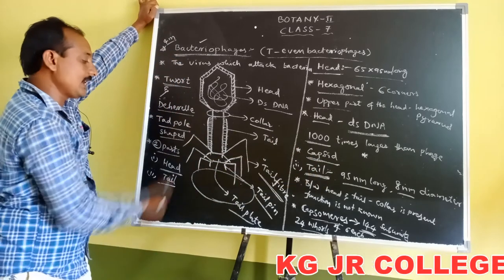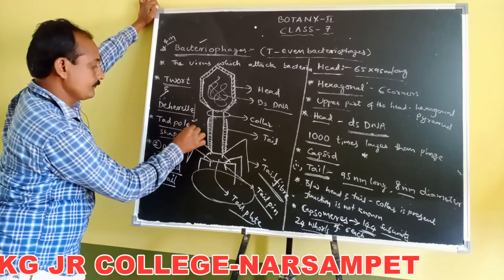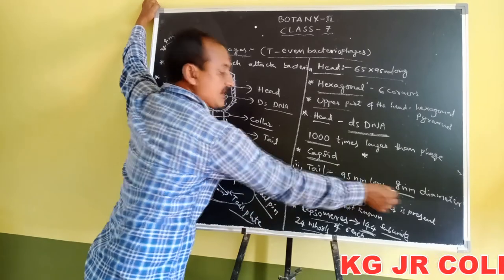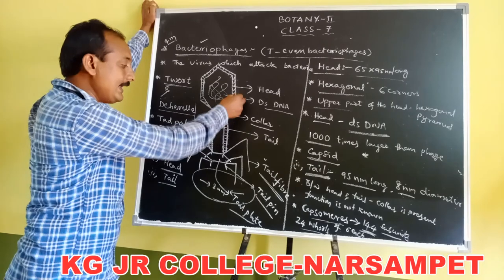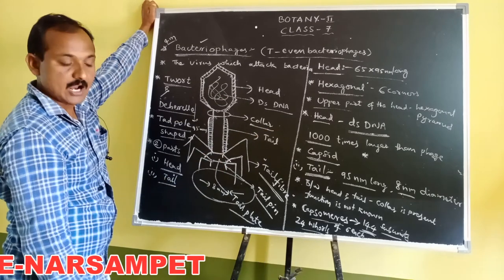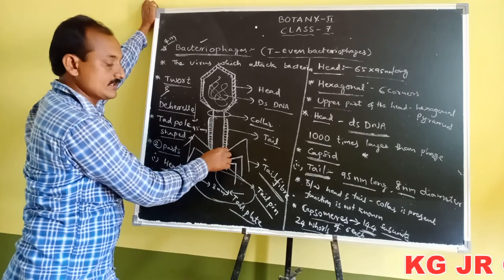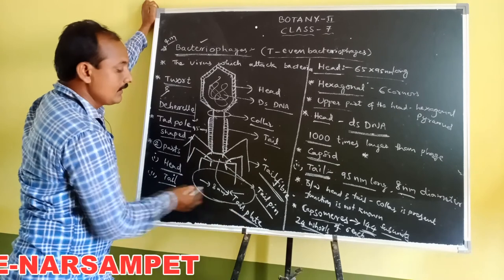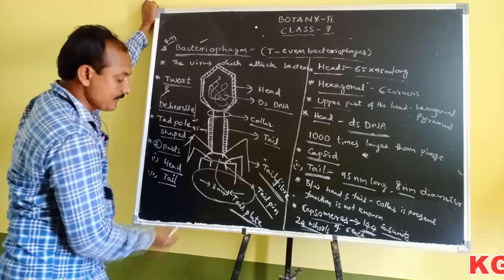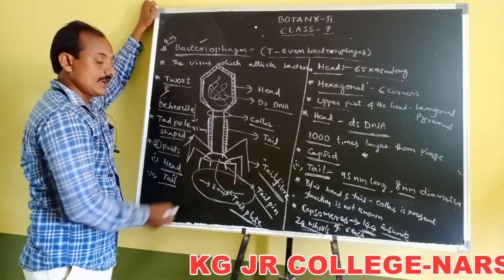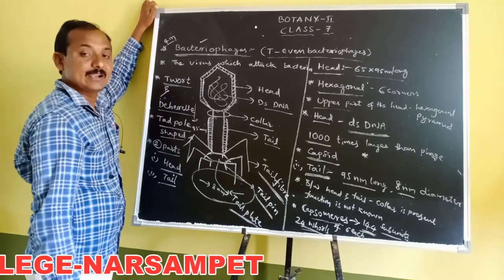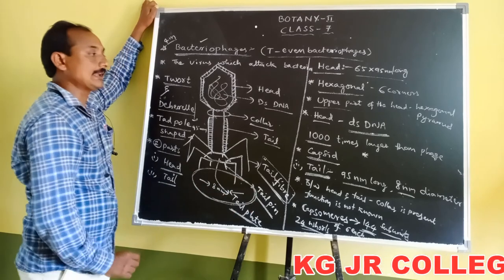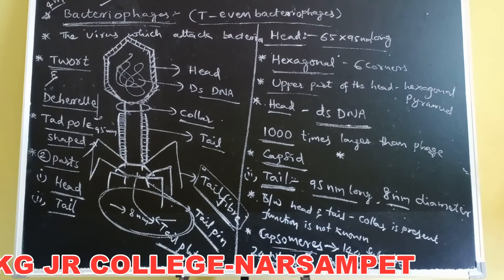The second part is the tail, which is 95 nanometers long and 8 nanometers in diameter. Between head and tail, a collar is present whose function is not known. The tail is surrounded by 144 subunits arranged in 24 rings of 6 each. At the bottom, the tail plate is hexagonal in shape with 6 corners. Each corner consists of 1 tail fiber and 1 tail pin. Due to the presence of tail fibers, bacteriophages attach to the receptive site of the bacteria.